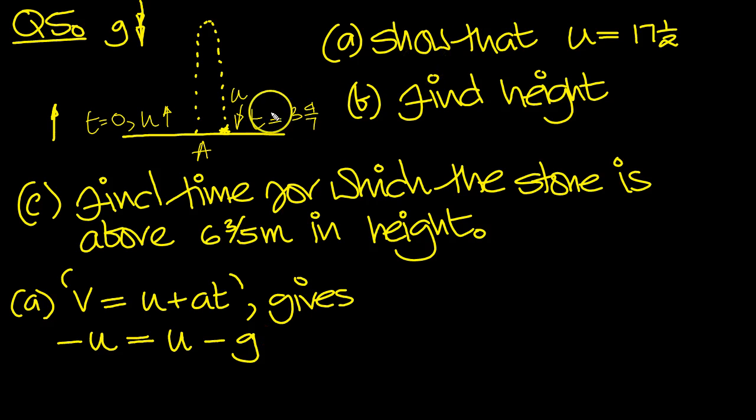And we know the total time is 3 and 4 sevenths. As a fraction, that's 21 plus 4 is 25 sevenths. That tells us then, if we move this over there and we move the u over here, we'll write it from right to left, 2u is equal to 25g over 7.